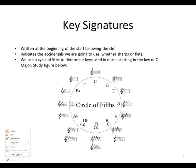Key signatures — what are key signatures? First of all, they are written at the beginning of the staff following the clef. They indicate to us the accidentals that we are going to use, whether it will be sharps or flats. We use the cycle of fifths to determine the keys used in music, starting with the mother of all keys, the C major key. Let us study the figure below.